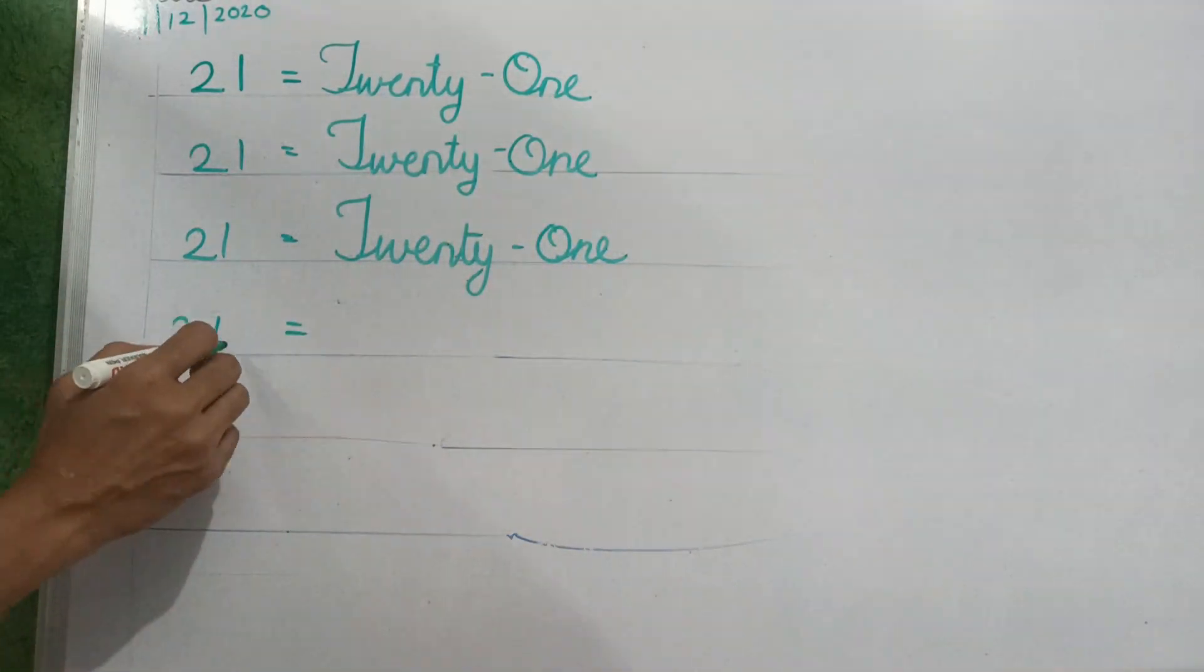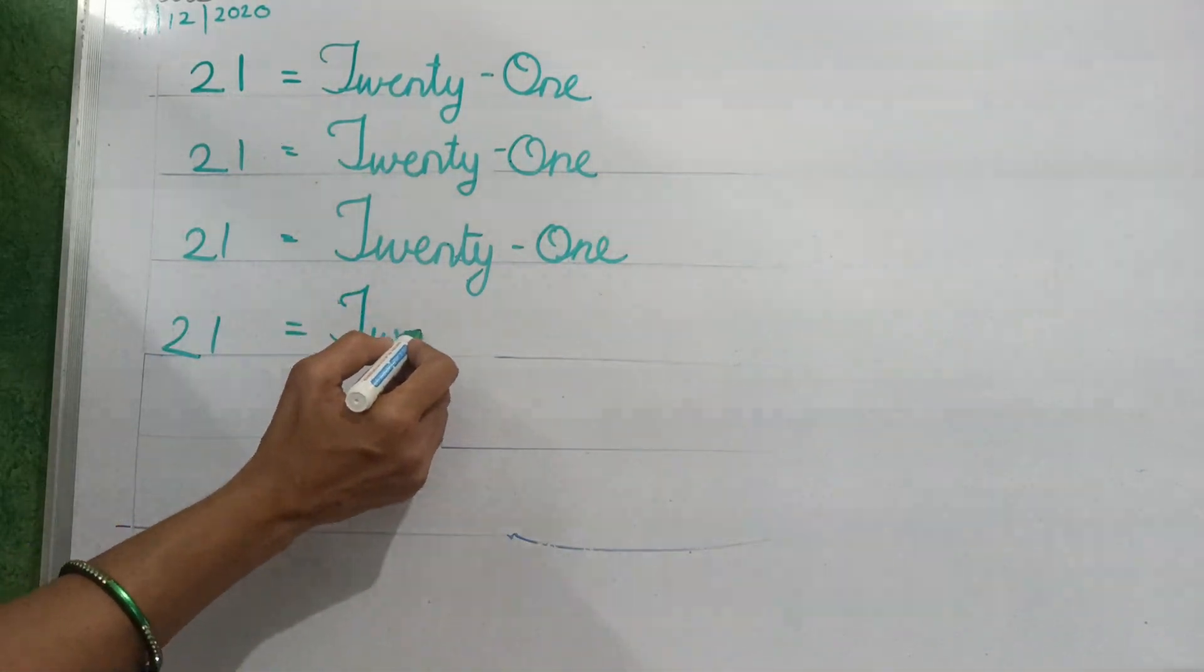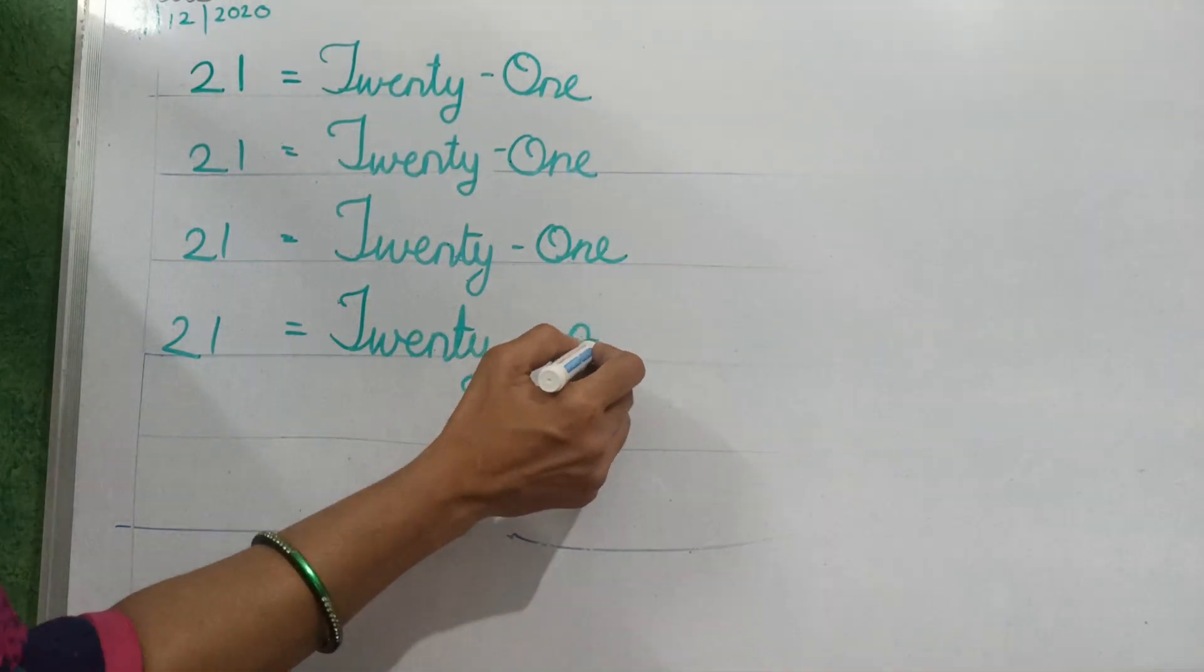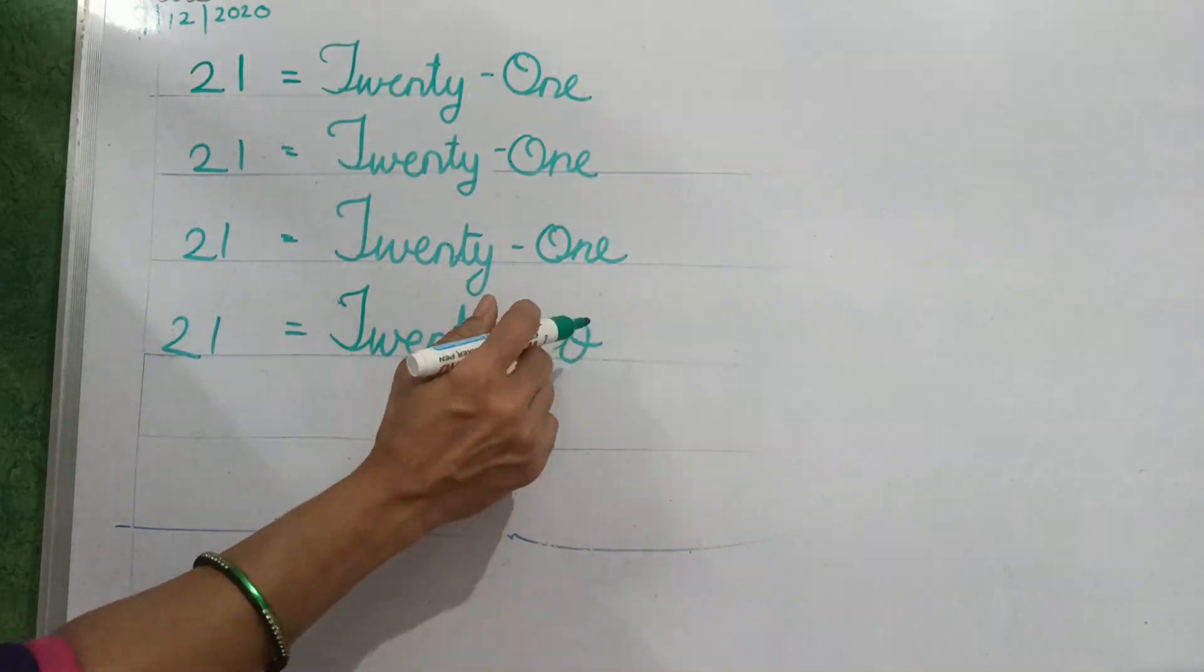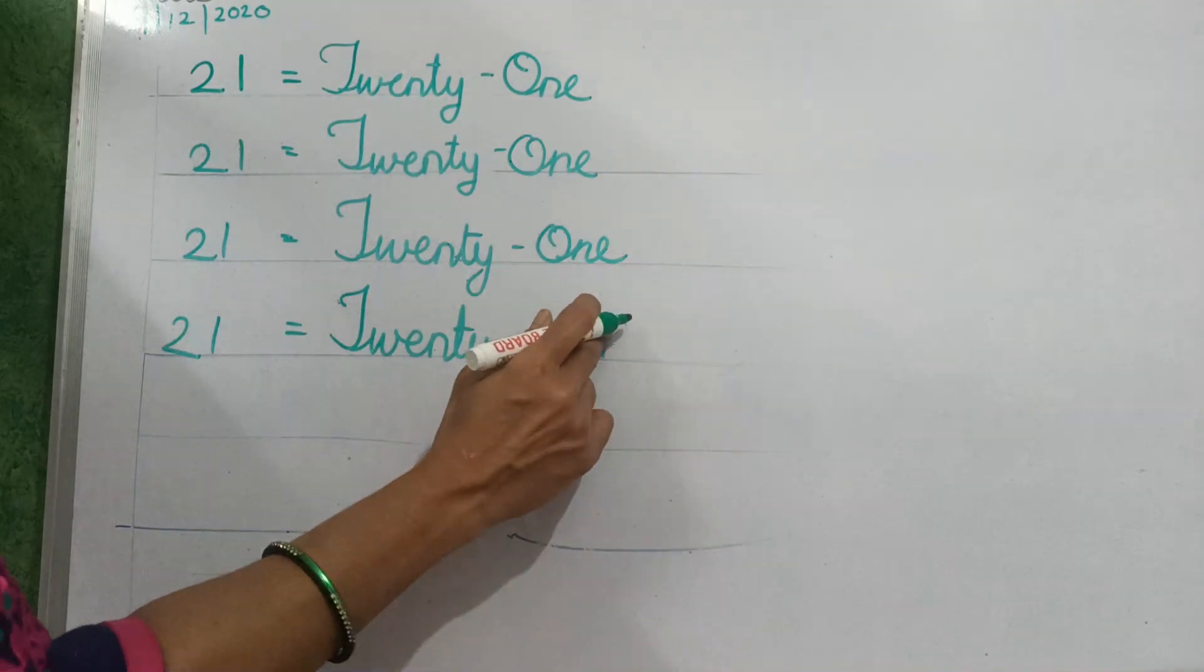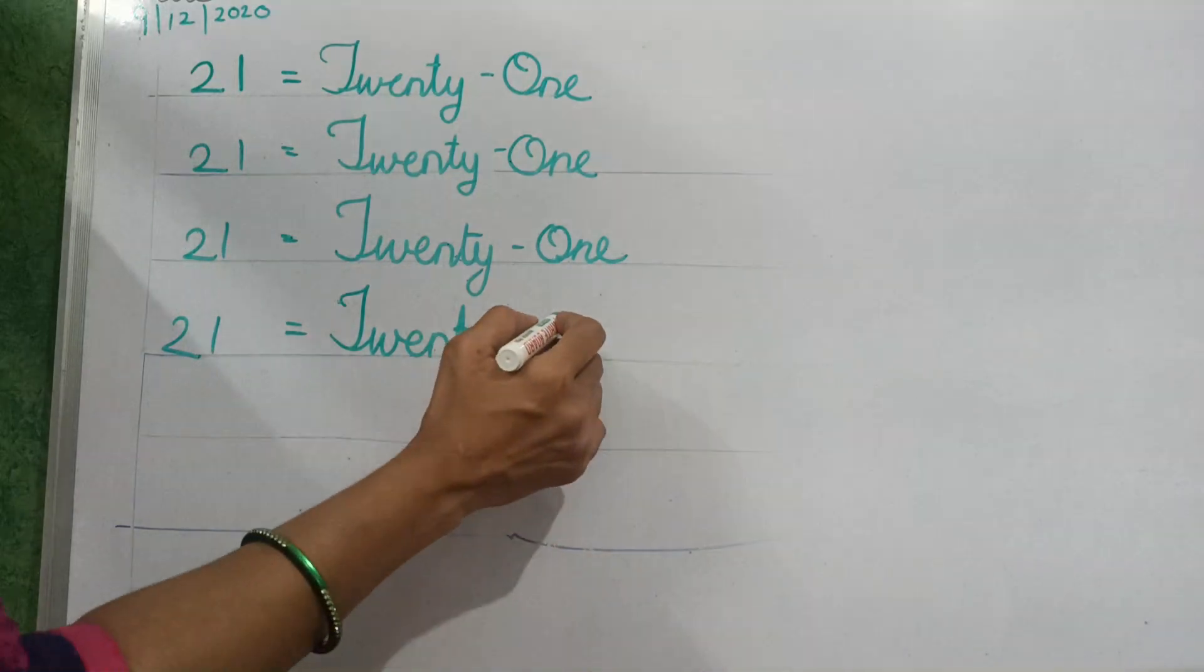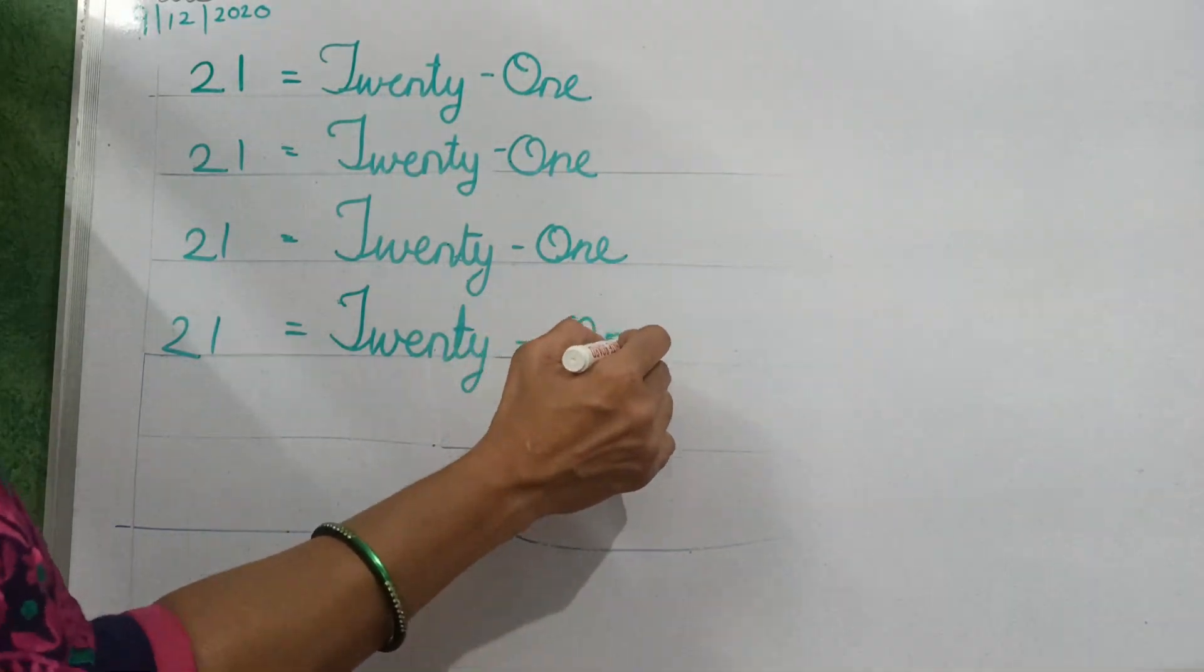21. 2, 1, 21. T, W, E, N, T, Y, 20. O, sorry, capital O. O, N, E, 1.